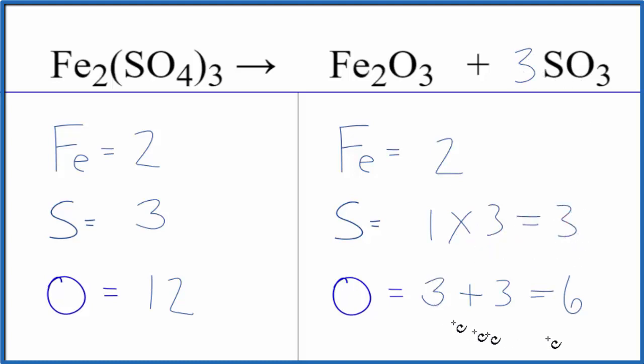Now we need to update the oxygens. We have 3 here plus 3 times 3, which gives us 9. So 3 plus 9 gives us 12, and we're done.